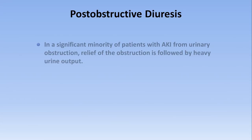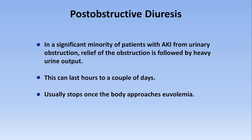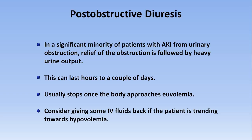There is one complication that is not a complication of AKI itself, but a potential complication of treatment: post-obstructive diuresis. In a significant minority of patients with AKI due to urinary obstruction, relief of the obstruction will be followed by heavy urine output for hours to a couple of days — the mechanism behind this is not entirely clear. For most patients the high urine output stops once the body approaches euvolemia, but occasionally it continues, resulting in hypotension. After relief of obstruction, keep an eye on urine output and consider giving fluid back if the patient is trending towards hypovolemia.